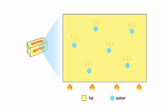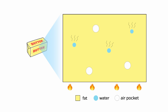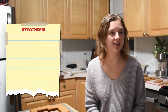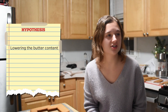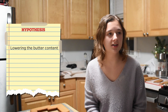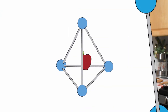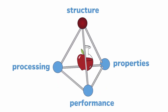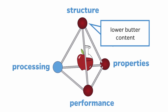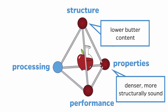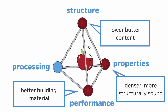That's a really good idea. Butter contains water which can become steam at the high temperatures used for baking, creating air pockets in cookies. I think we have our hypothesis. We predict that decreasing the amount of butter in the gingerbread cookie recipe will make cookies which are denser and thus more structurally sound. This hypothesis is an example of how changing the structure can influence the properties and performance of a material. Decreasing the butter content reduces the steam and air pockets produced, which makes for denser, more structurally sound cookies — giving us a better building material.